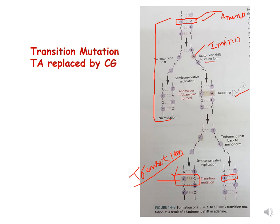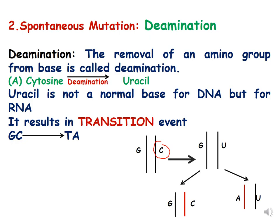This was the first mechanism of spontaneous mutation — tautomers. The second mechanism is deamination. As the name suggests, deamination means removal of an amino group from a base. In the first example, when deamination of cytosine — a pyrimidine — happens, it converts to uracil. Uracil is not a normal base for DNA, but it is a base for RNA, and uracil will bond with adenine.